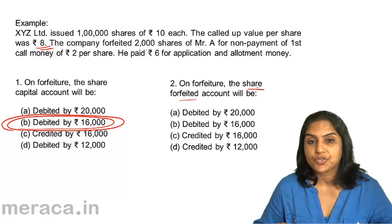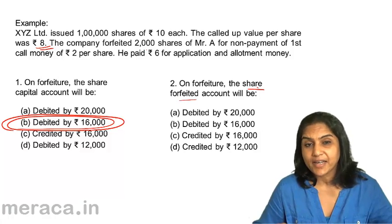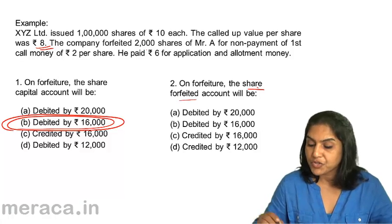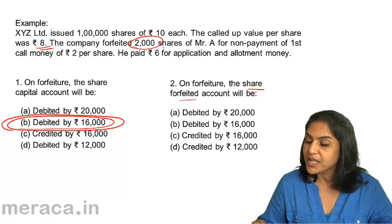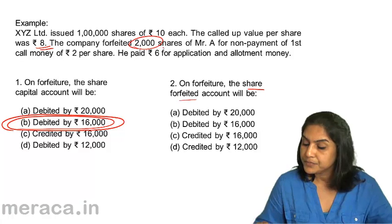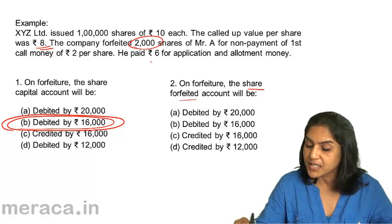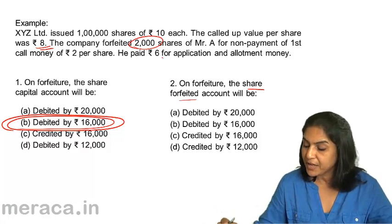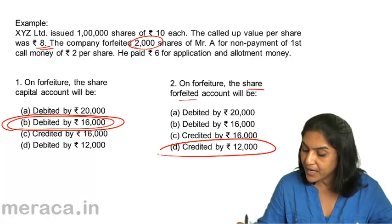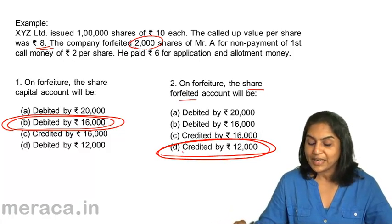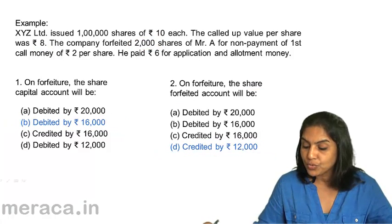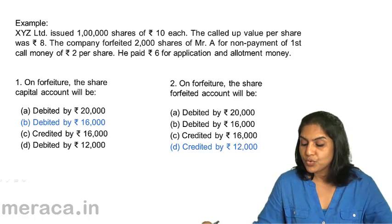The share forfeited account on forfeiture gets credited with the amount received on the shares forfeited. The number of shares forfeited is 2,000. He paid Rs 6 for application and allotment money and did not pay Rs 2. So Rs 6 has been paid. Therefore, 2,000 shares into Rs 6 equals Rs 12,000 — it should be credited by Rs 12,000. The correct answer is 2D. Therefore, the correct answers are 1B and 2D.